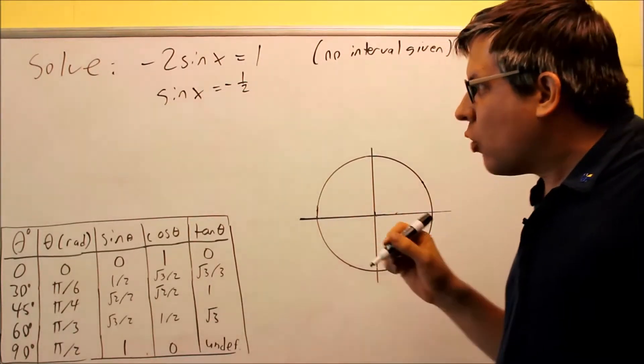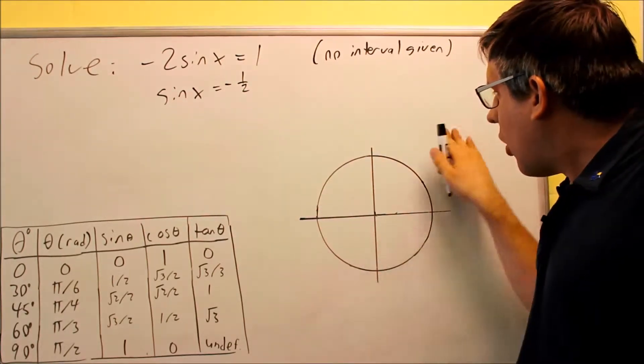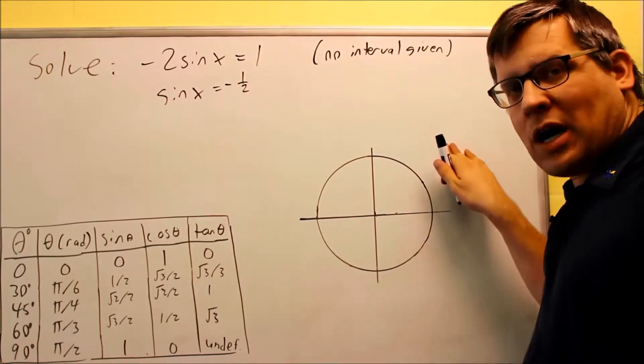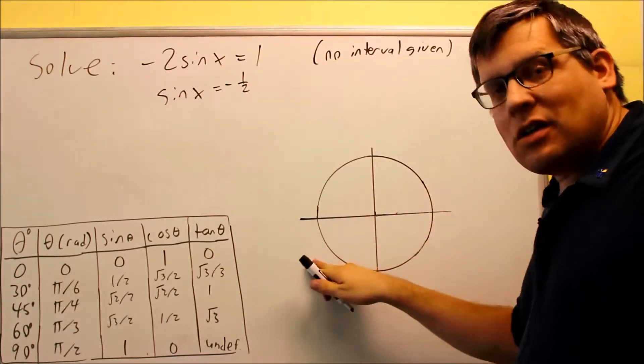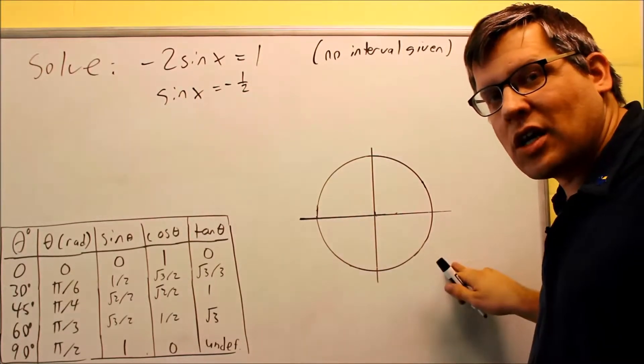We need to think about what quadrants is sine negative in. If I do all students take calculus, that means all of it is positive here, students means sine is positive, take means tangent is positive so sine is negative here, and in calculus cosine is positive, everything else is negative.